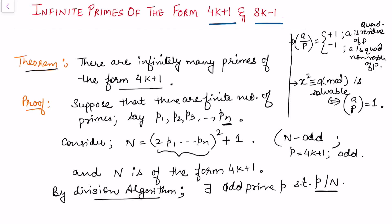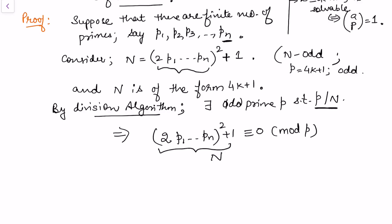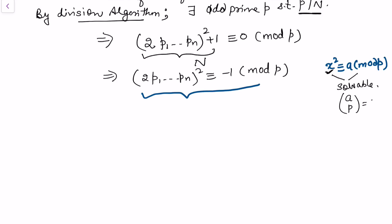Since N is composite, some prime must divide it. Because p divides N, we have 2·p₁·...·pₙ)² + 1 ≡ 0 (mod p), which gives (2·p₁·...·pₙ)² ≡ -1 (mod p). This congruence is of the form x² ≡ a (mod p), and since it is solvable, the Legendre symbol (a/p) = 1.